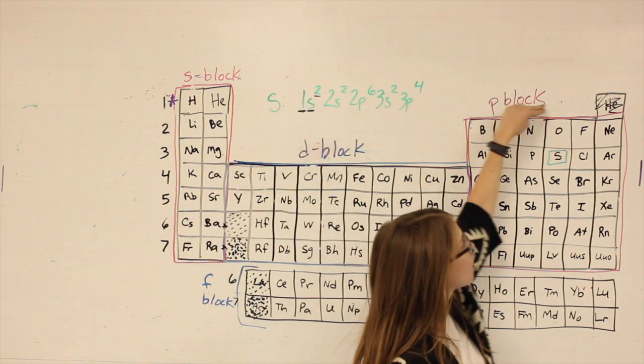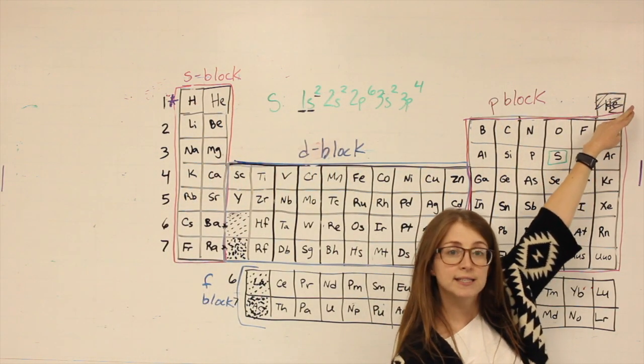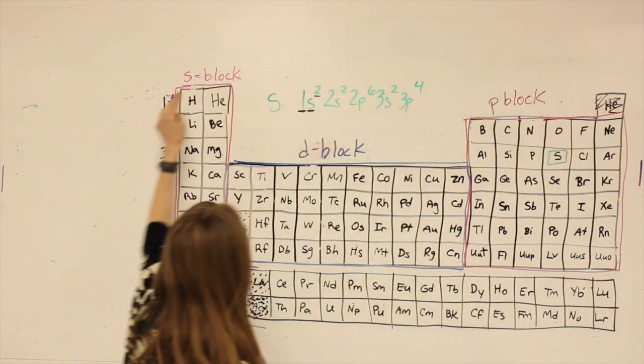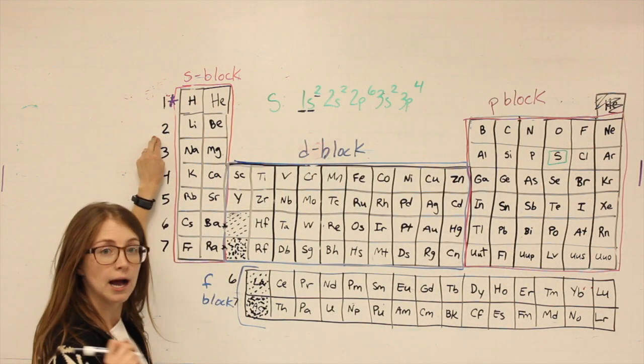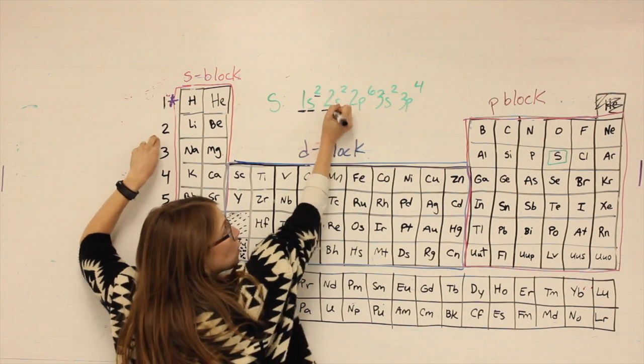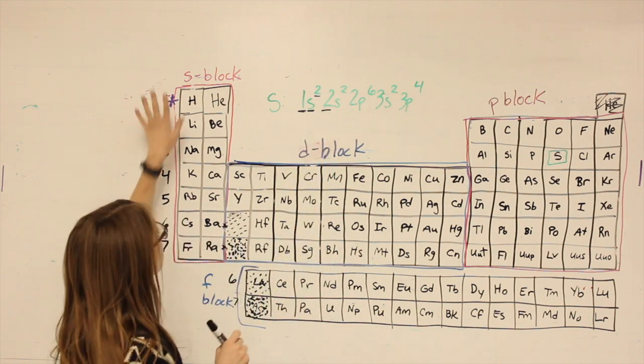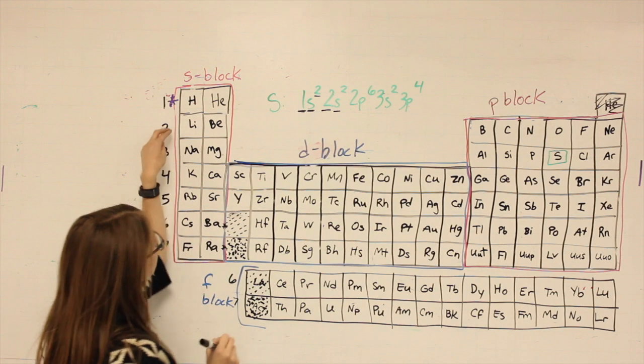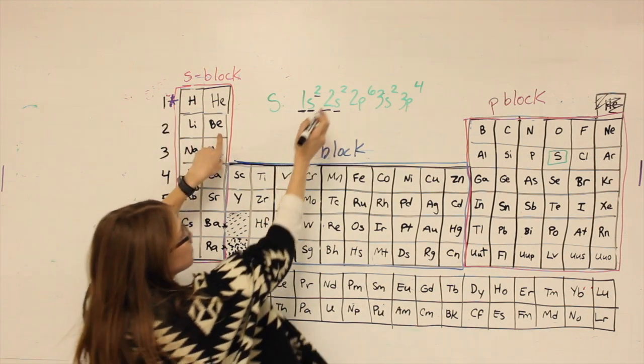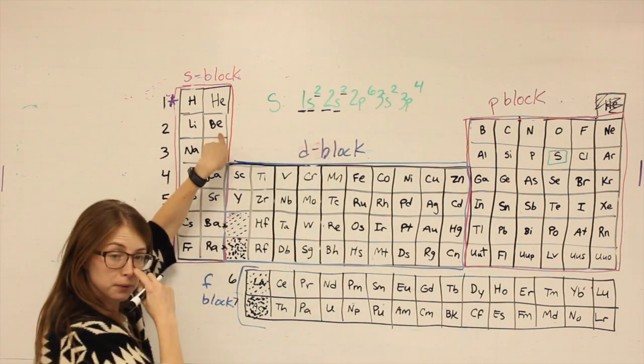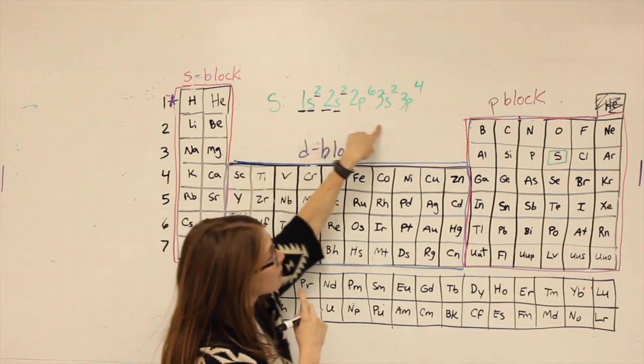That gets me through helium. I look, there's nowhere else to walk through in that first row. So to continue on my path, I go down to the second row. I ask myself, what row am I in? Second. What block? S. How many spaces? One, two. Walking, walking, walking.